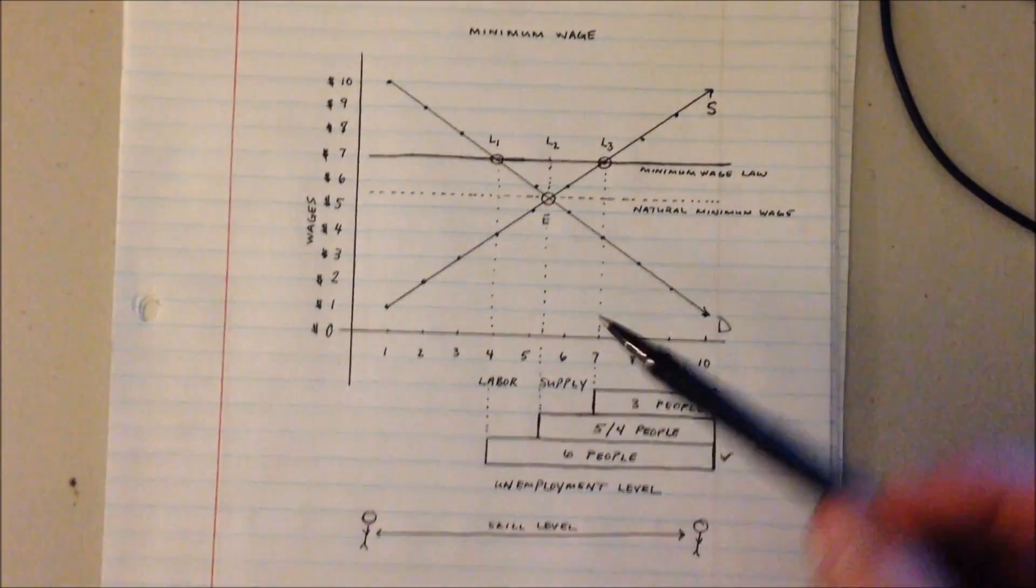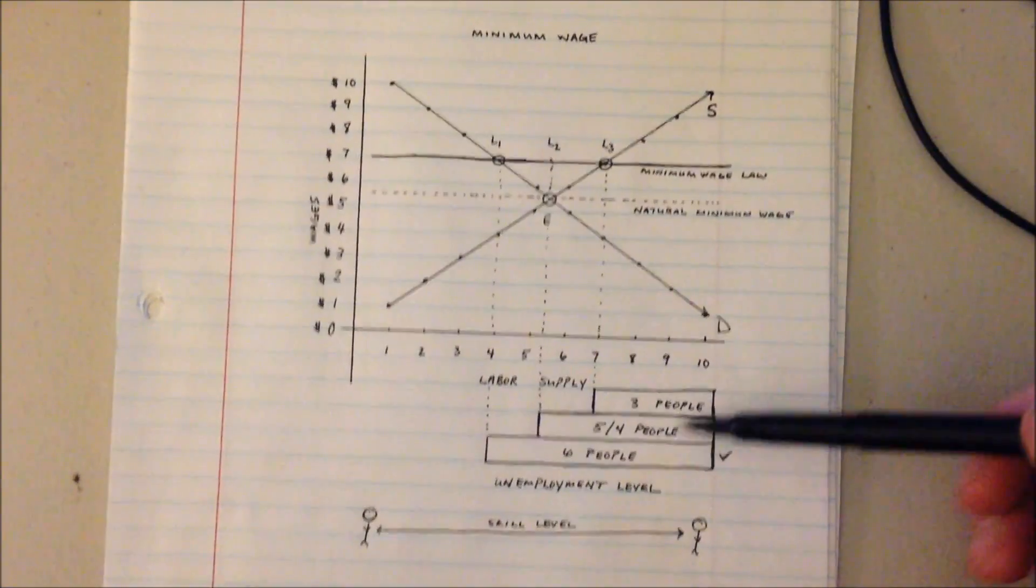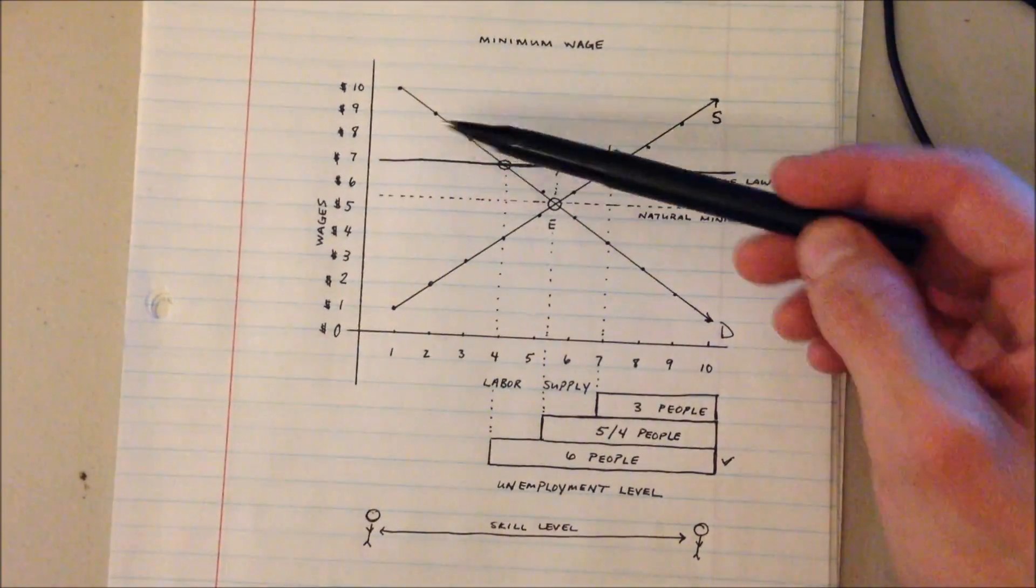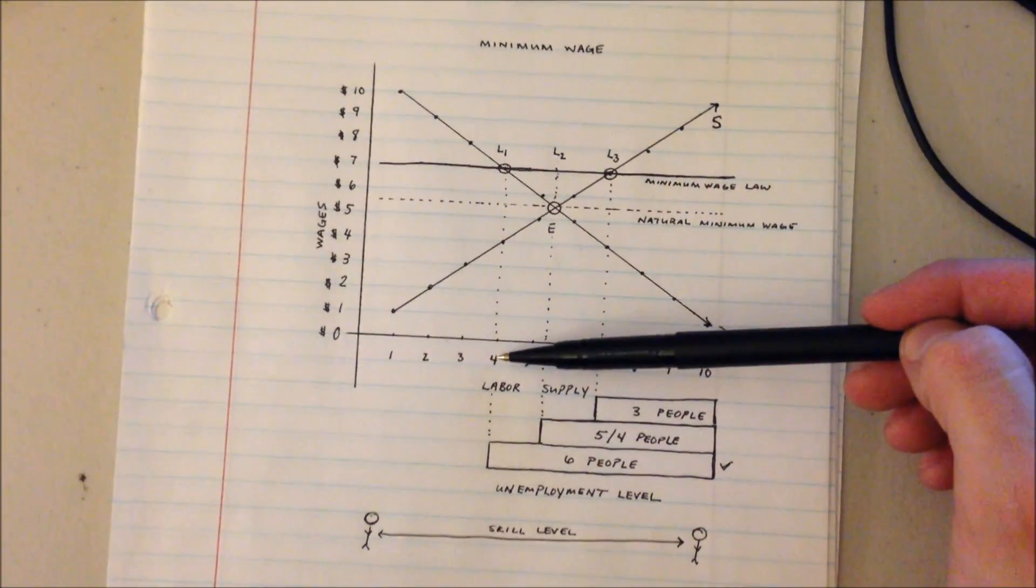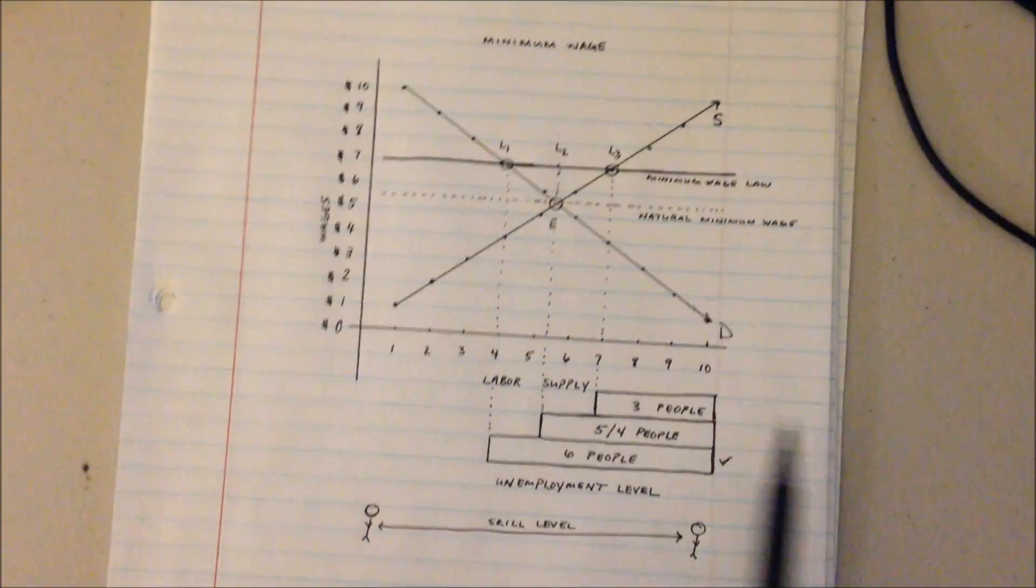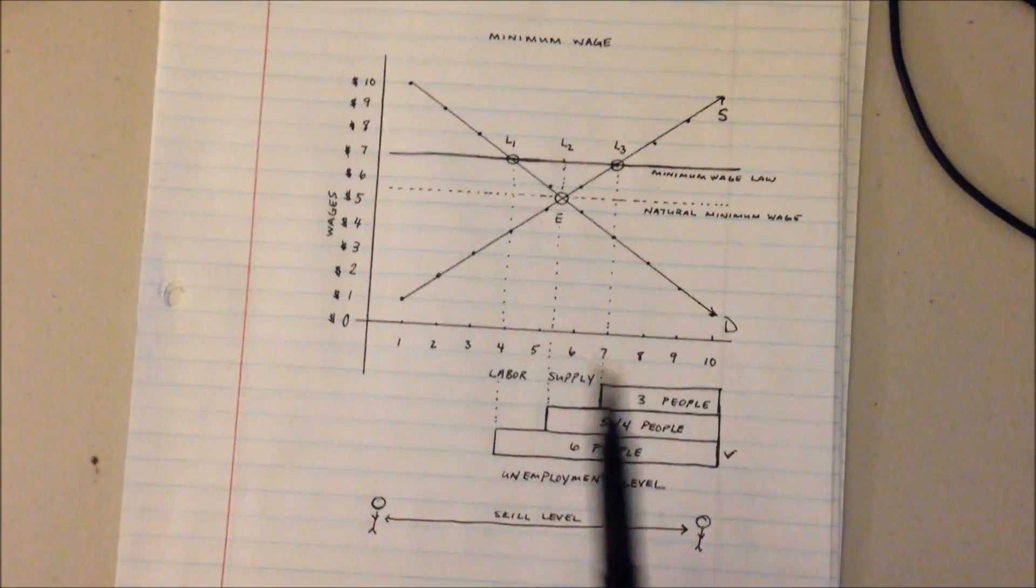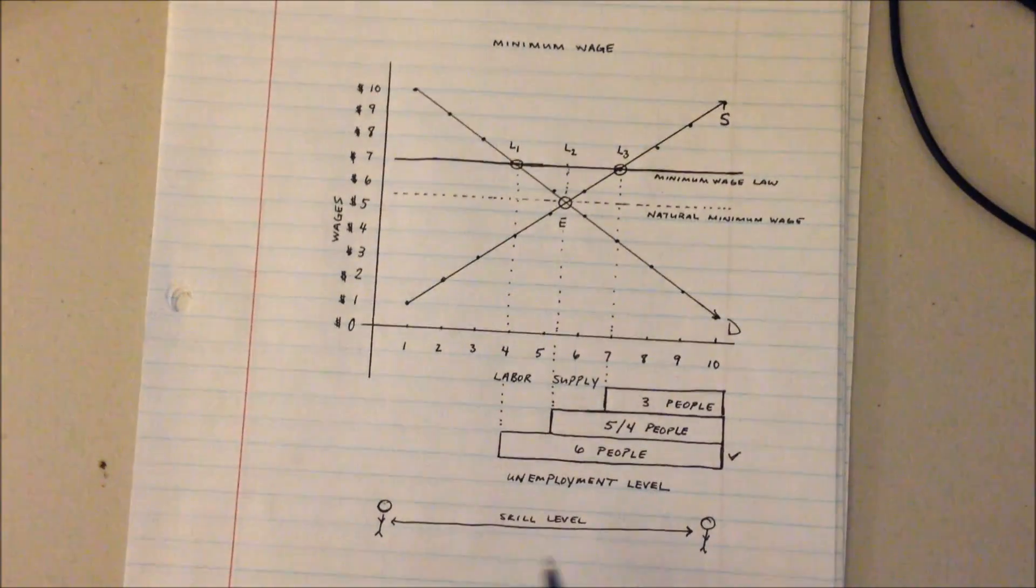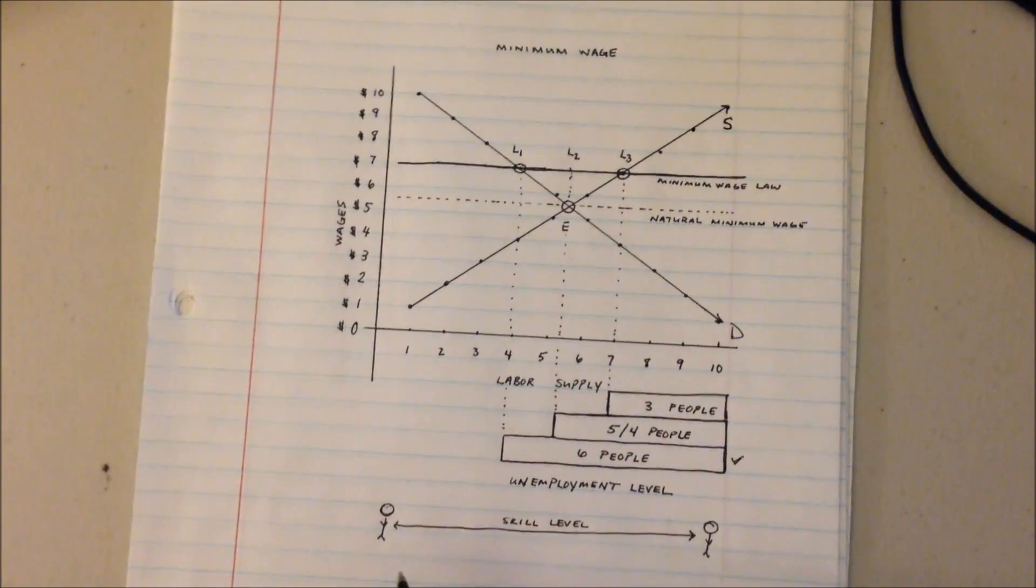Now that we know that we're going to go with the 6 people unemployed because the demand line gets to choose the L1, they say we're going to employ 4 people, we can also start to consider who those 4 people might be. And typically the fewer employees that they're willing to employ because they have to pay more and more for them, they're going to pay for a higher skill level employee.